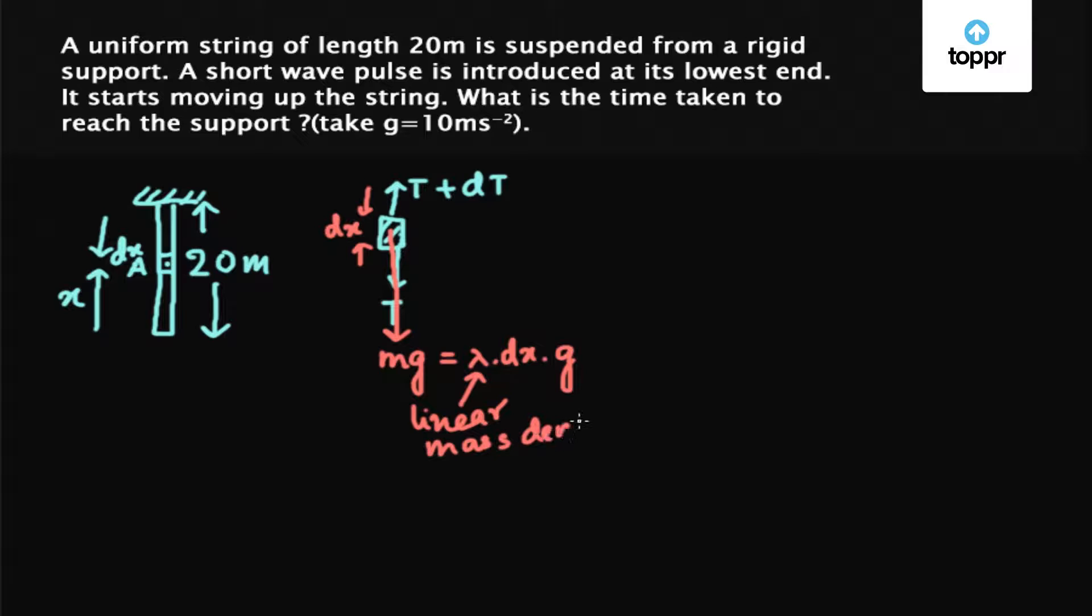So balancing forces for this element along the vertical direction, we get T plus dT minus T minus mg equals zero, which implies dT equals mg equals lambda into g into dx.